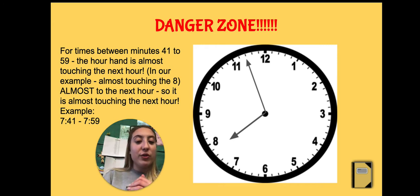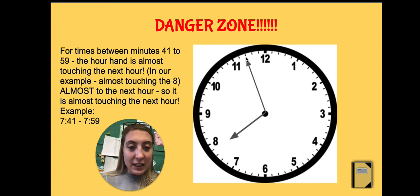But this is also where we hit a danger zone with our hours. So for the times between 41 and 59, our hour hand is almost touching the next hour. So when it says right here, this is 7:57.